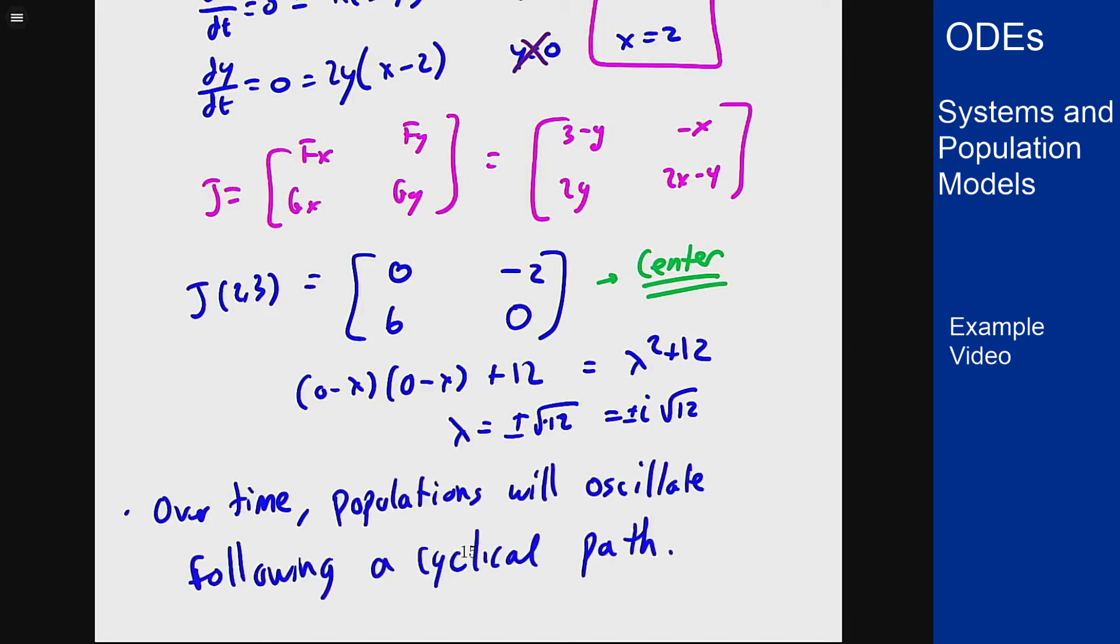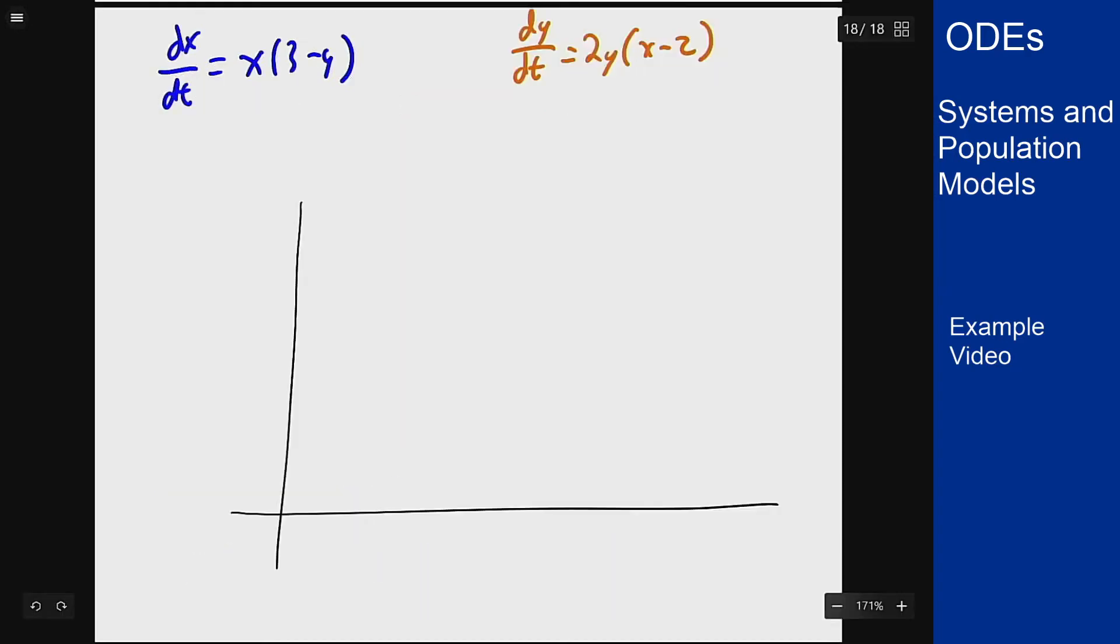We can also analyze the same idea with a nullcline diagram, because our nullclines here are x equals 0 and y equals 3 for dx/dt, and for dy/dt, they are y equals 0 and x equals 2. So the only solutions are the intersection point here and (0,0). We're ignoring the (0,0) case, so we're looking at the one in the first quadrant.